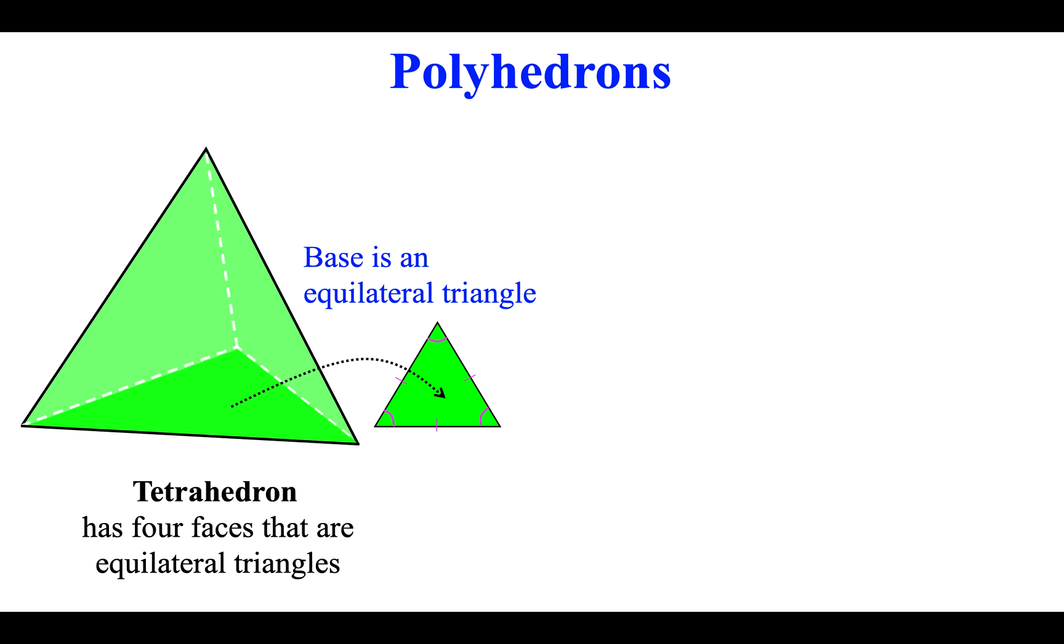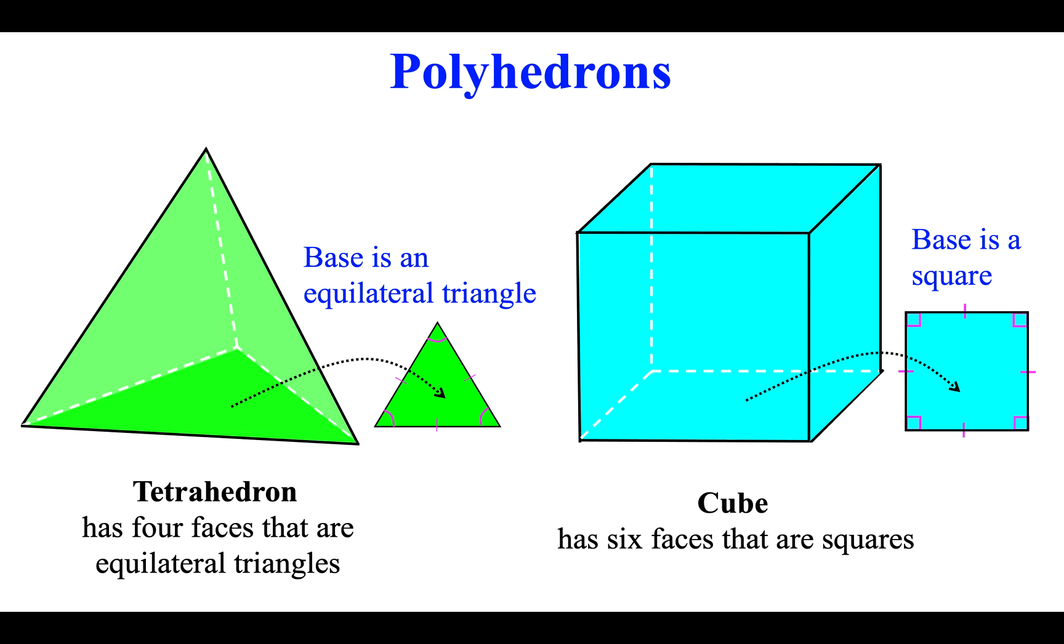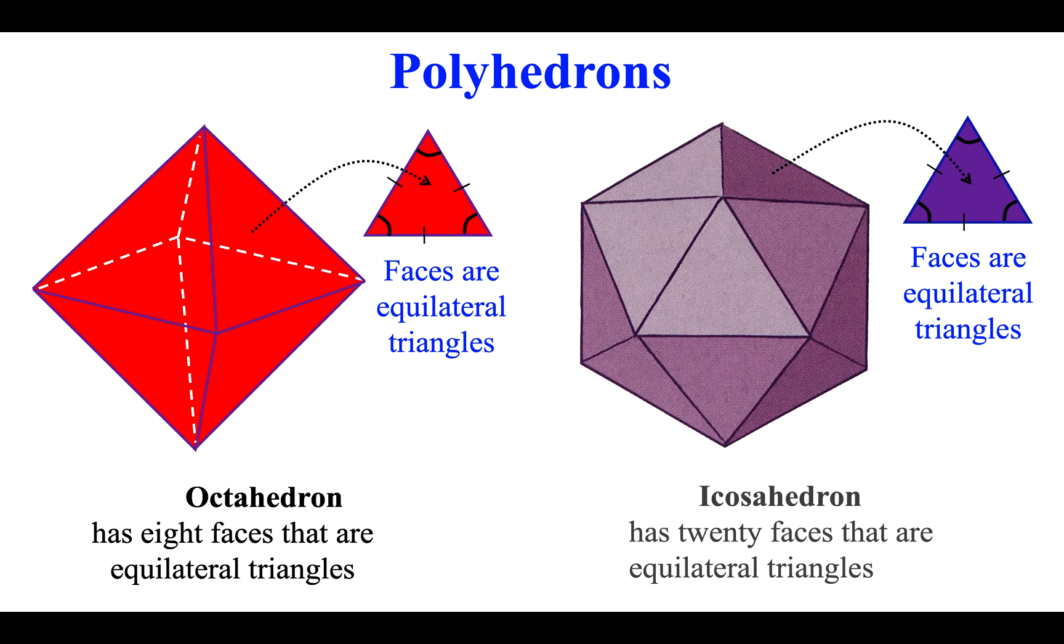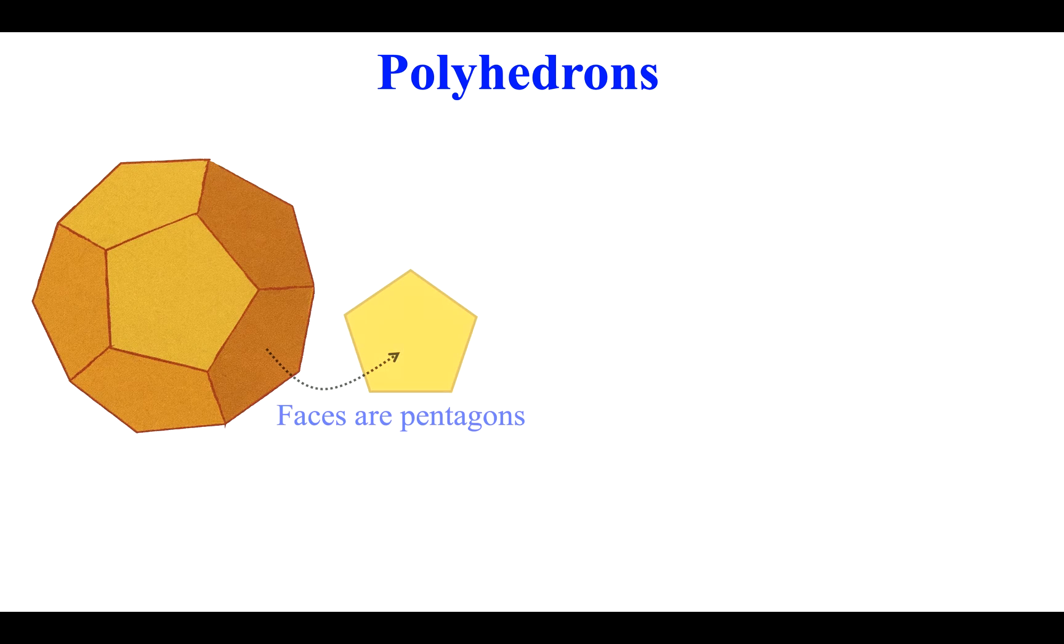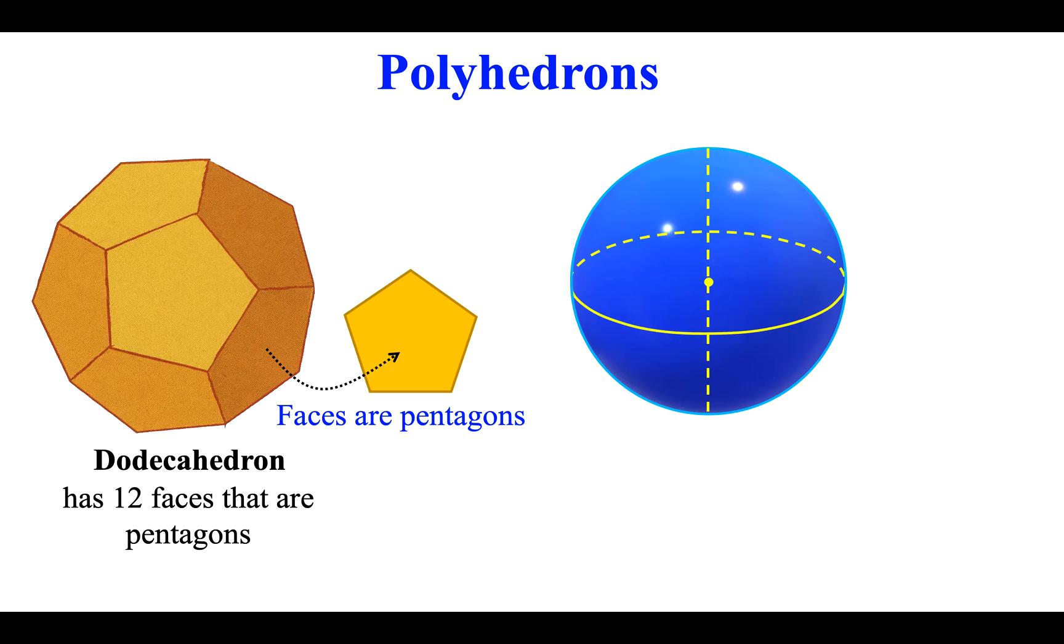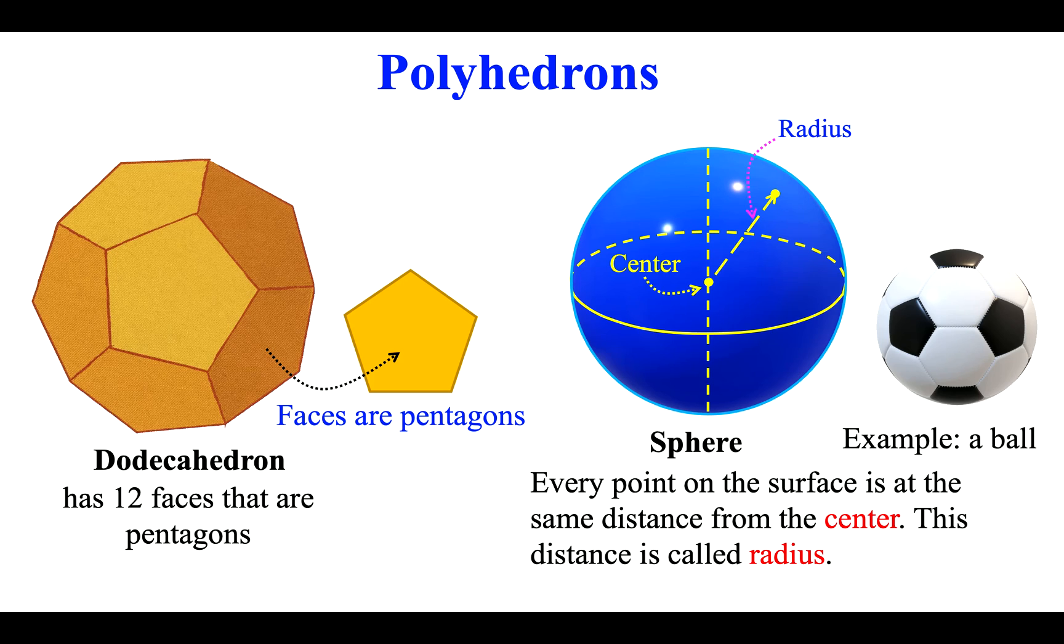Polyhedrons: Tetrahedron has four faces that are equilateral triangles. Cube has six faces that are squares. Octahedron has eight faces that are equilateral triangles. Icosahedron has 20 faces that are equilateral triangles. Dodecahedron has 12 faces that are pentagons. Sphere: Every point on the surface is at the same distance from the center. This distance is called radius.